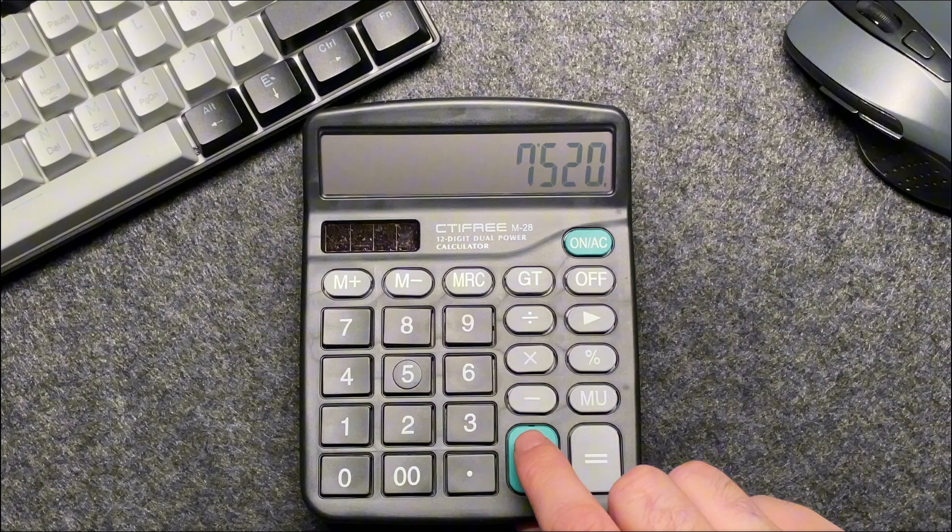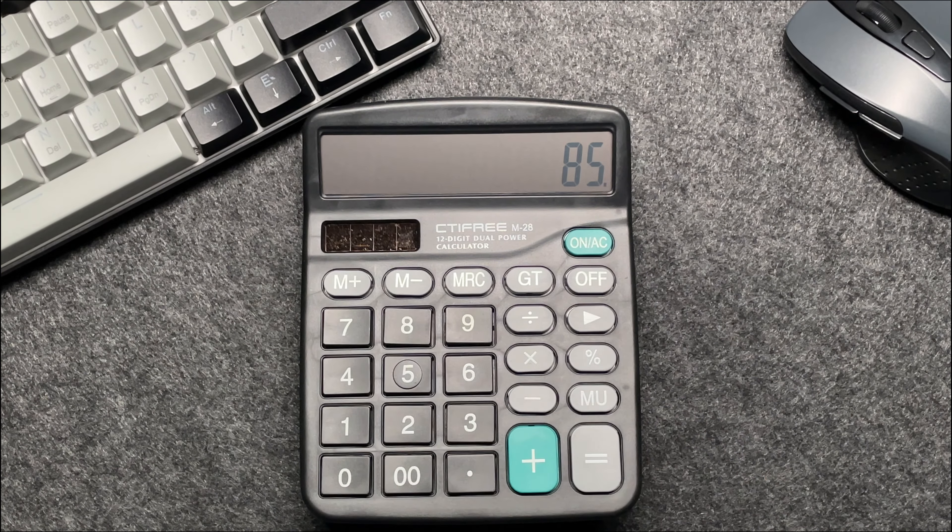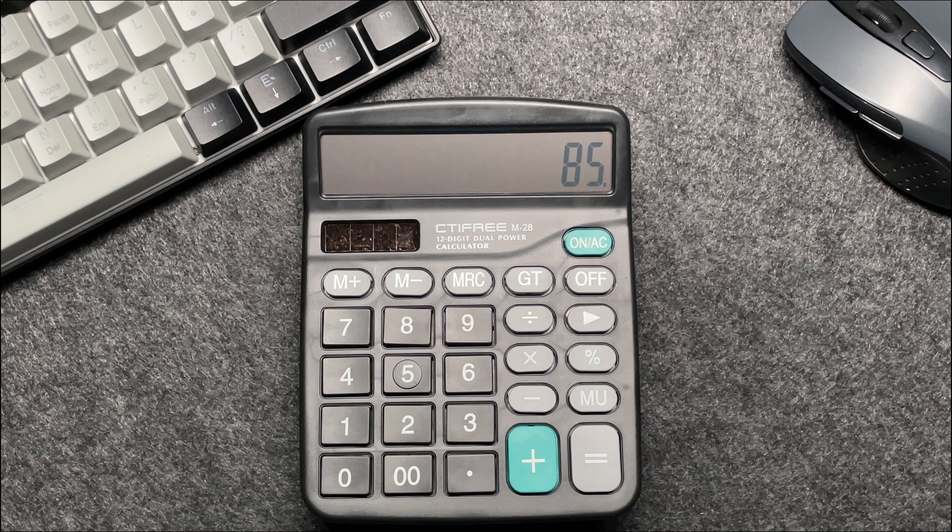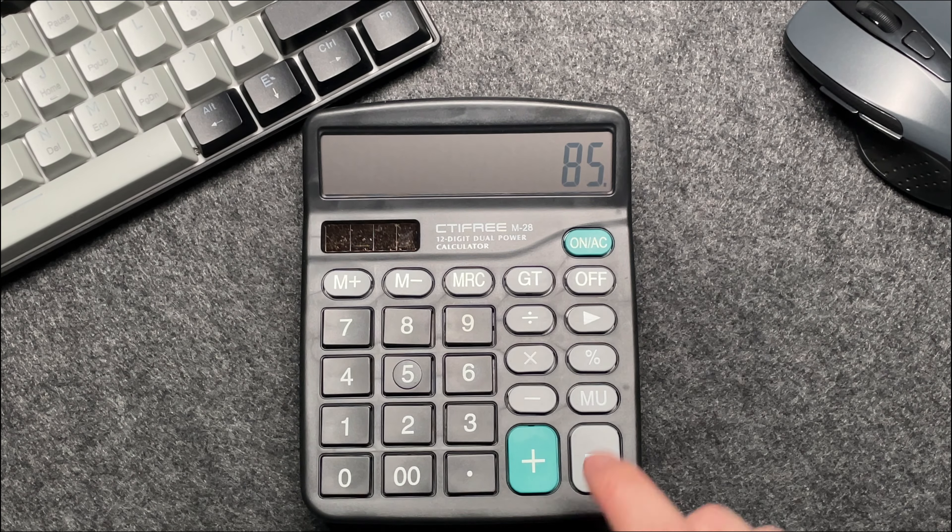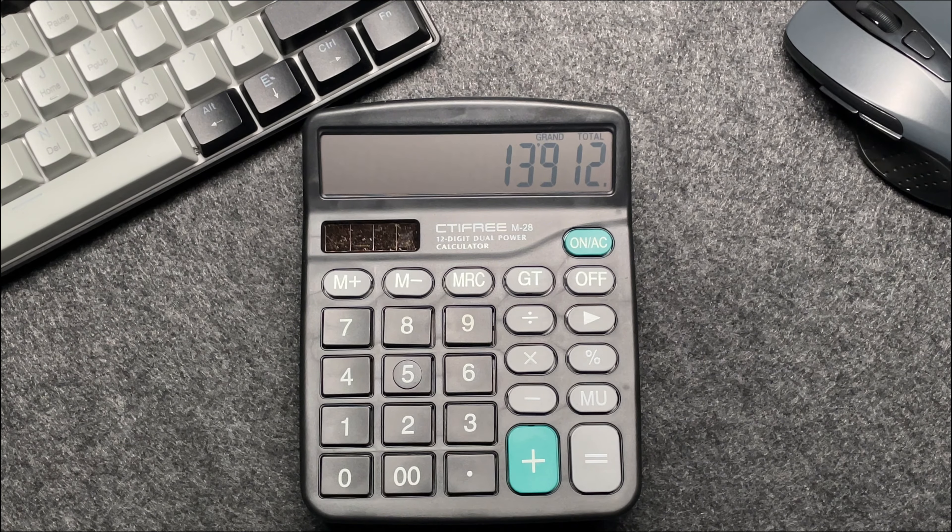First, you want to press the plus button on your calculator. Next, type 85, representing the 85% increase. Finally, you want to press the percentage button and the calculator will show you the final price.